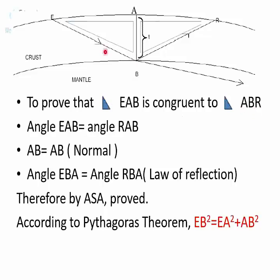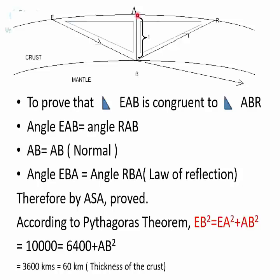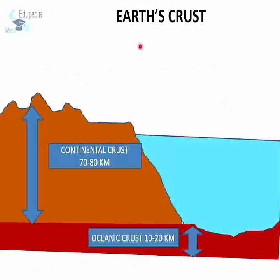According to the Pythagorean theorem, E-B squared equals E-A squared plus A-B squared — that is, the square of the hypotenuse equals the sum of the squares of the height and base of a right angle triangle. This calculation gives us 60 km as the thickness of the crust. Several such experiments indicate that the thickness of the continental crust is 70 to 80 km, while the thickness of the oceanic crust is 10 to 20 km. On average, the crust can be said to be about 60 km in thickness.